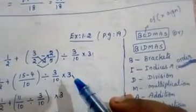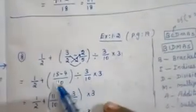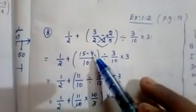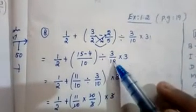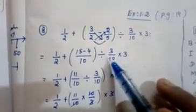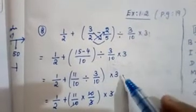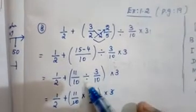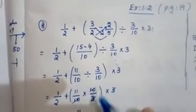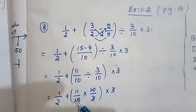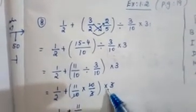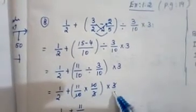Next operation by BODMAS/BIDMAS is division. Simplify the bracket: 15 minus 4 is 11, so we have 11/10 divided by 3/10. For division, take the reciprocal: multiply by 10/3 into 3. Now 10 in the numerator and 10 in the denominator cancel, and 3 and 3 also cancel. After cancelling, we have 1/2 plus 11/1.